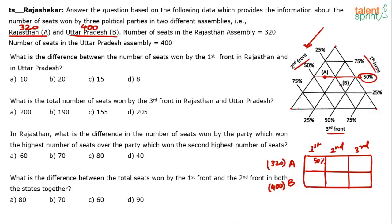Now look at the Second Front. I draw a dotted line parallel to the 25%, 50%, 75% slant lines for the Second Front, passing through A. This line falls exactly between 25% and 50%, which gives us 37.5%. So if the First Front is 50% and the Second Front is 37.5%, obviously the Third Front must be 12.5%, because the total must be 100%.